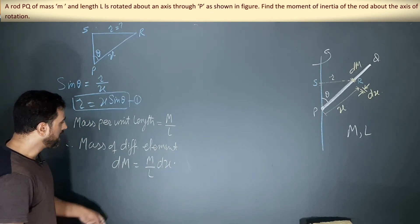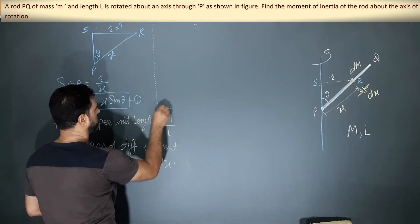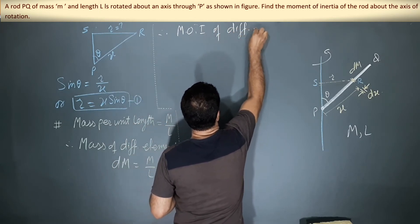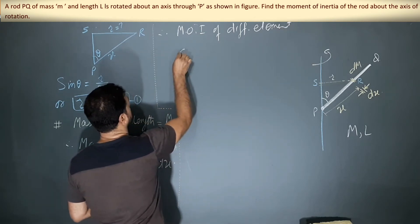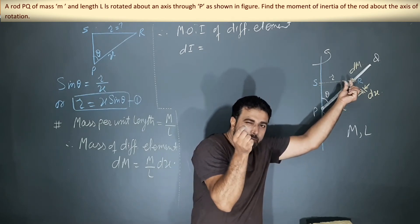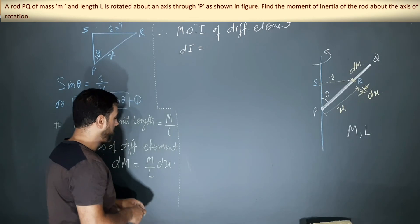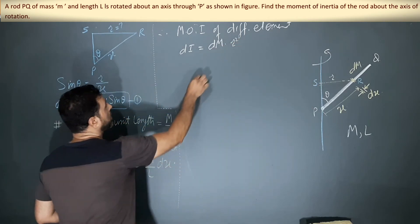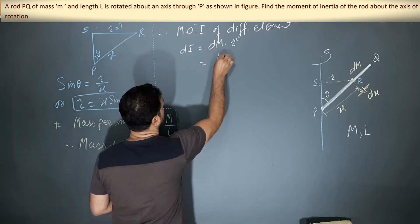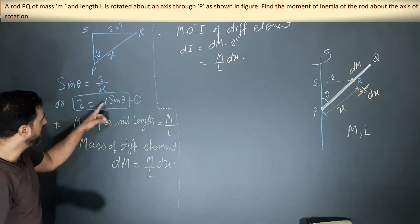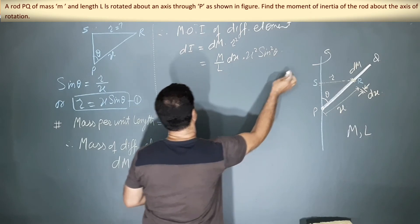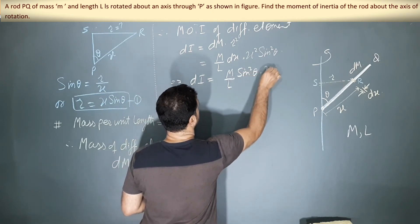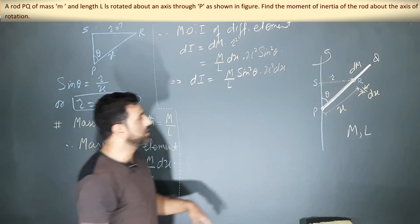So dm = (M/L)·dx. Therefore, the moment of inertia of the differential element, dI, equals mass times distance squared — that is, dm·r². Substituting dm = (M/L)·dx and r = x·sin theta, we get dI = (M/L)·sin²theta·x²·dx. This is the moment of inertia of this small element.